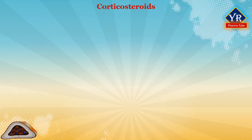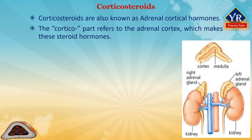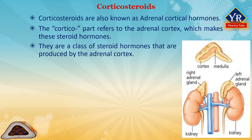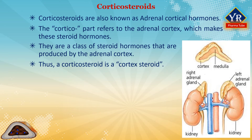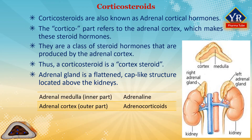Introduction to corticosteroids. Corticosteroids are also known as adrenal cortical hormones. The 'cortico' part of the name refers to the adrenal cortex, which makes these steroid hormones. They are a class of steroid hormones produced by the adrenal cortex. The adrenal glands of mammals are situated just above the kidneys, as you can see in the figure. Adrenal glands are flattened, cap-like structures located above the kidneys.